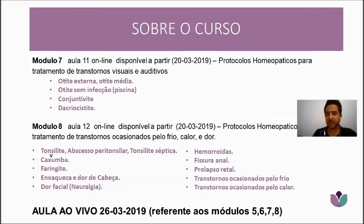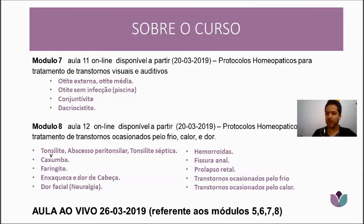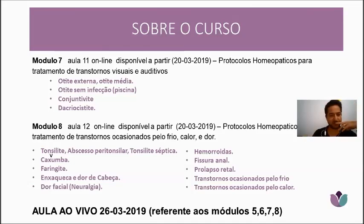Module 7 covers homeopathic protocols for visual and auditory disorders: otitis (with and without infection), conjunctivitis, and dacryocystitis. All types of conjunctivitis will be addressed — bacterial, viral, allergic, sun-related conjunctivitis from beach exposure to solar radiation, or from swimming pools.